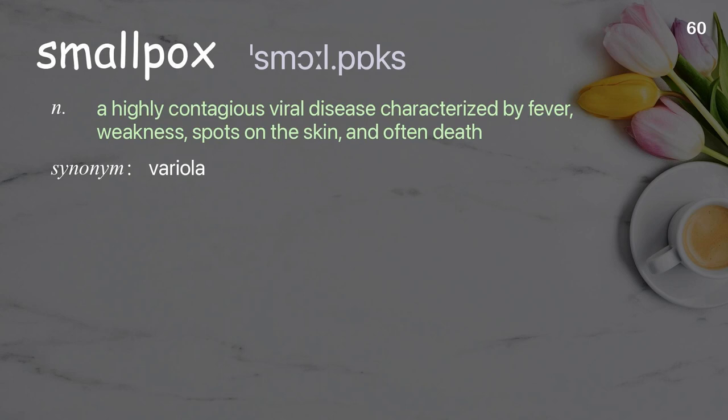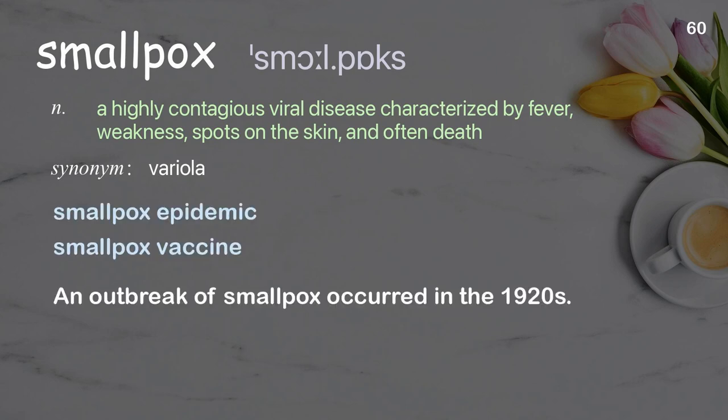Smallpox: a highly contagious viral disease characterized by fever, weakness, spots on the skin, and often death. Examples: smallpox epidemic, smallpox vaccine. An outbreak of smallpox occurred in the 1920s.